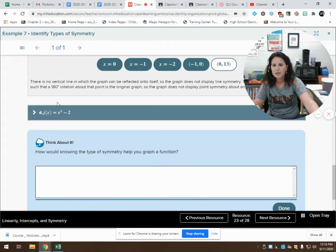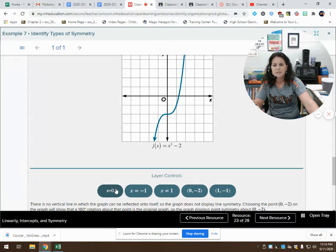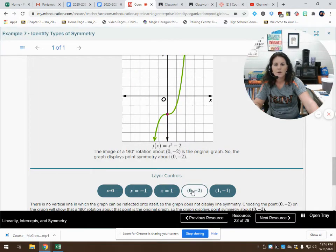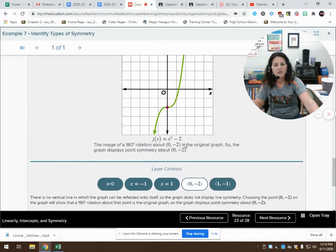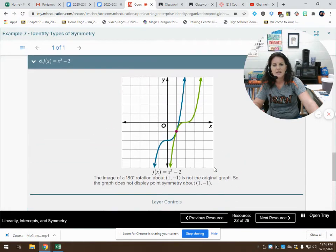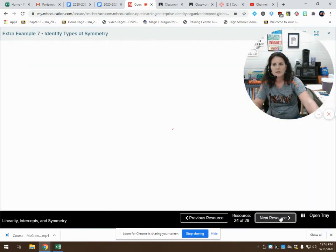And our last one, does it have any type of symmetry? Well, let's look. Line symmetry? No. Line symmetry? No. Line symmetry? No. Point symmetry? Looks like if I rotated about that point, my line lies on itself. So, it must have point symmetry at the point 0, 2. It does not have line symmetry, however, at this point.